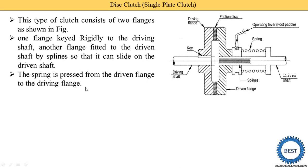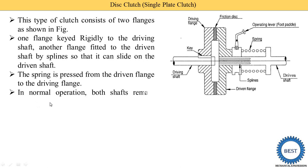The spring is pressed from the driven flange to the driving flange. Here you see, this spring is pressed from the driving flange to the driven flange — from this side to this side. Here you see, this is the operating lever, or the foot pedal. In a four-wheel vehicle, we press the clutch using the foot pedal, which is provided inside the cabin. In normal operation, both shafts remain engaged by the clutch due to the spring force.